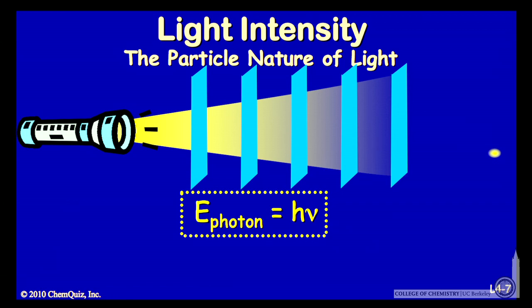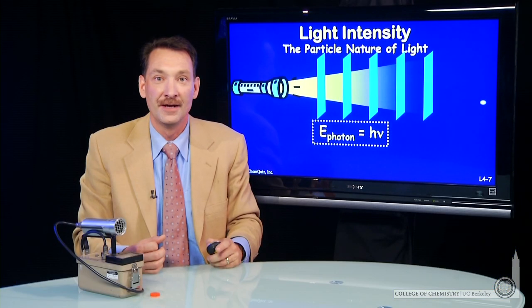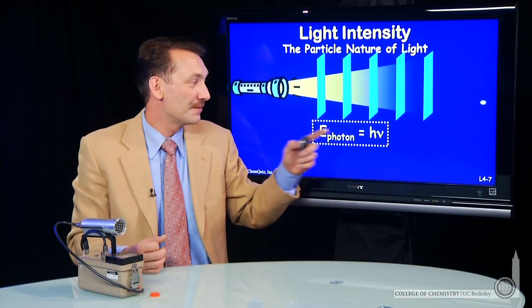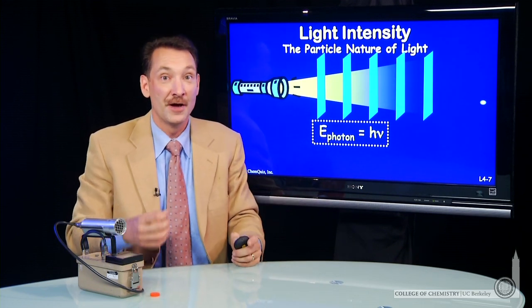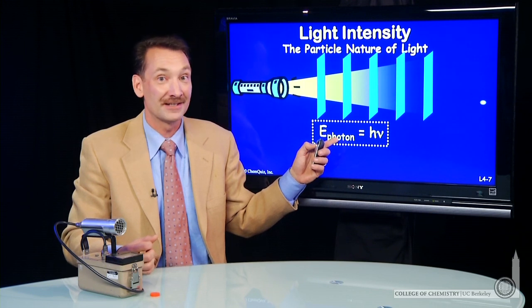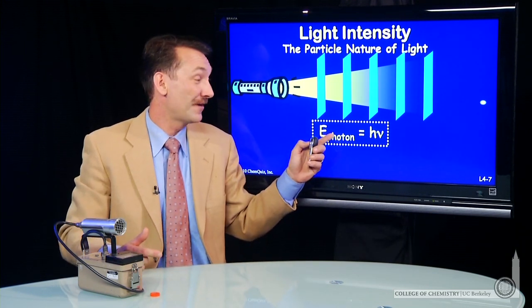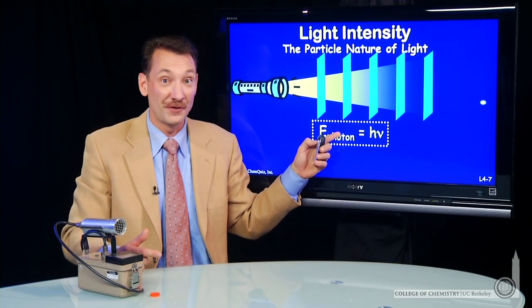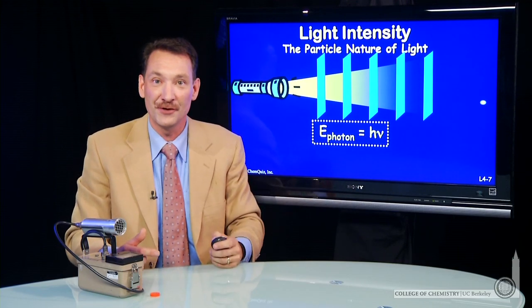The energy of the photon is given by h — Planck's constant — times the frequency of the light. So the frequency of the light times Planck's constant gives you the energy of the photon, one of the most important equations in this class. If you take nothing else home from Chem 1, take home the fact that the energy of photons is given by Planck's constant times their frequency.